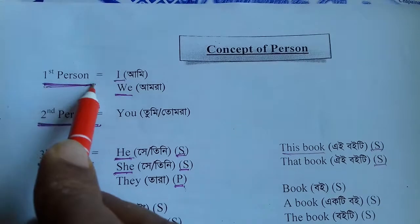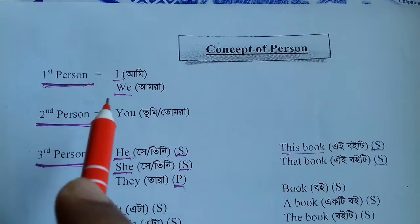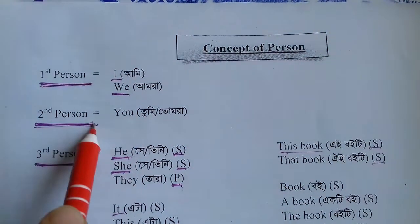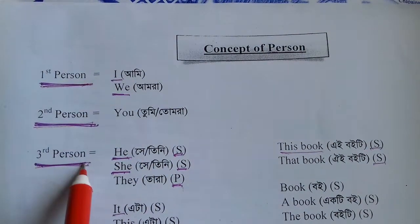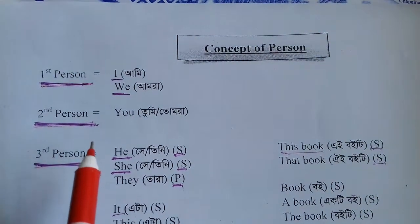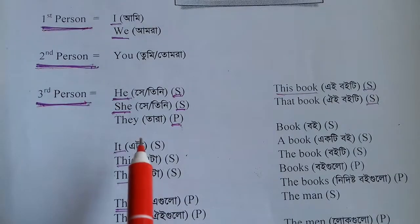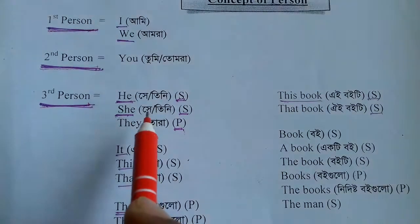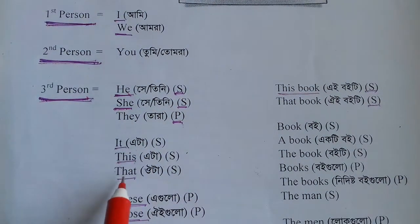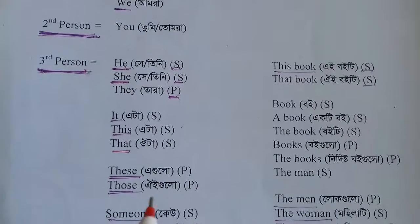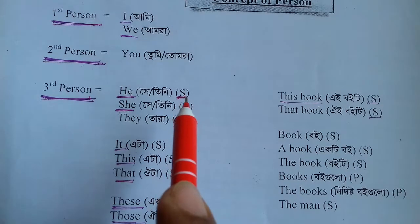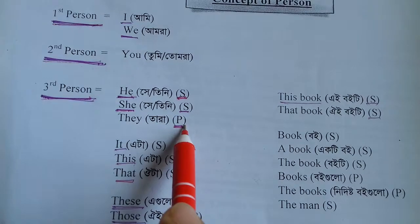Dear viewers, there are three kinds of person. First person, which is 'I' — means ami; 'we' — means amara. Second person: 'you.' Third person: except first person and second person, all the others are third person. Some words of third person include: 'he,' 'she,' 'it' — eta, 'this,' 'that' — these indicate singular number, meaning a single object or person. 'They' indicates plural, which is more than one person or object.